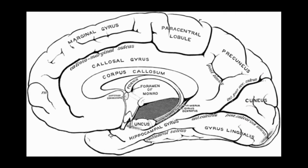Then we move on to the medial surface of the cerebrum. Here you can see the corpus callosum, the connecting bond. Above the corpus callosum is the cingulate gyrus, also known as the colossal gyrus, which has its own sulcus called the cingulate sulcus. Beneath the uncus you can see the hippocampal gyrus, also known as the parahippocampal gyrus. Below that is the occipitotemporalis — medial and lateral — divided by the occipitotemporal sulcus. On the right side there is the precuneus and the cuneus, important regions on the occipital region and the medial surface.